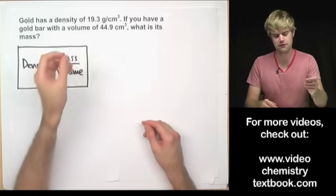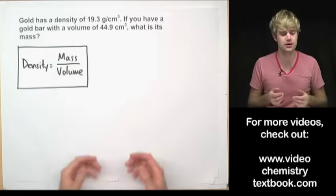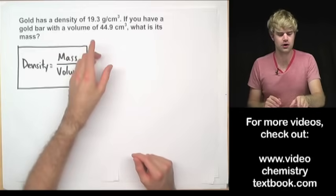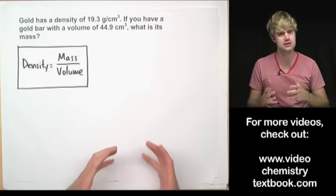Gold has a density of 19.3 grams per cubic centimeter. That's really high. Gold is very heavy. If you have a gold bar with a volume of 44.9 cubic centimeters, what is its mass?